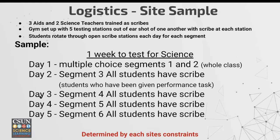The next day is segment four — the students will go to the gym and wait for a scribe to open. With five scribes, the scribe will write down their response to the segment four performance task. The same process happens on day four and day five, enabling students to have the test given over the entire week with just one segment at the end per day. Scribes are able to write down what the student is saying for that segment.